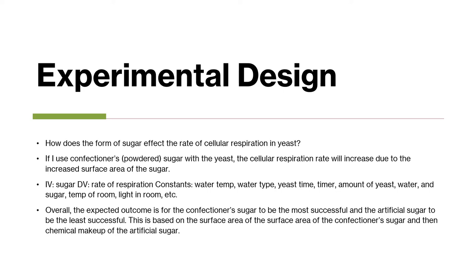My constants were things like water temperature, water type, the yeast, the timer I used, the amount of yeast, water, and sugar, the temperature of the room, the amount of light in my room, etc. Everything other than the sugar and the rate of respiration I intended to keep the same. Overall, my expected outcome was for the confectioner sugar to be the most successful and the artificial sugar, like the coconut sugar, to be the least successful.